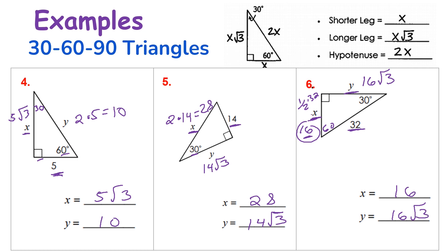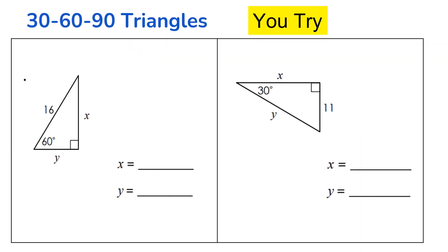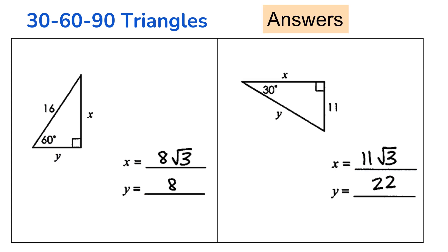Now let's try some on your own. Pause the video and find x and y using the 30-60-90 degree triangle theorem for these two problems. Here are your answers: for the first problem, x is eight times the square root of three and y is eight. For the second problem, x is 11 times the square root of three and y is 22.